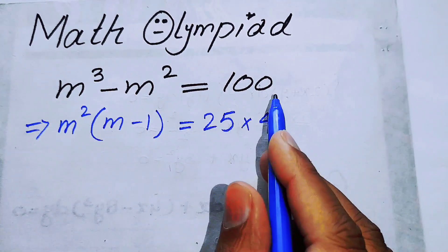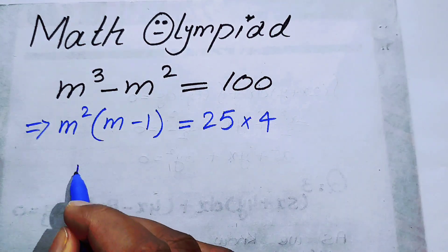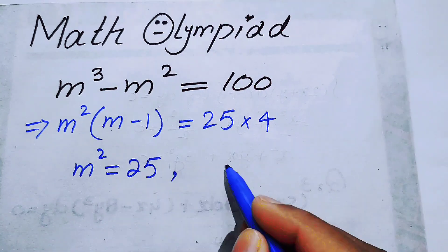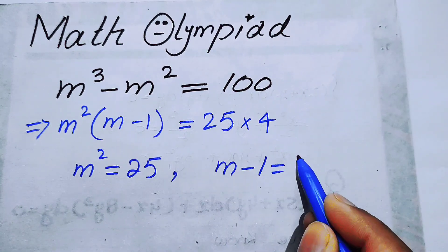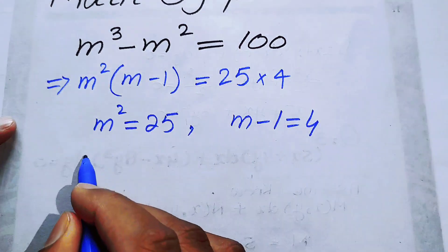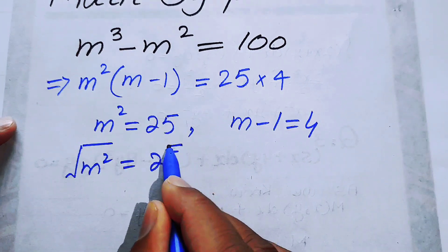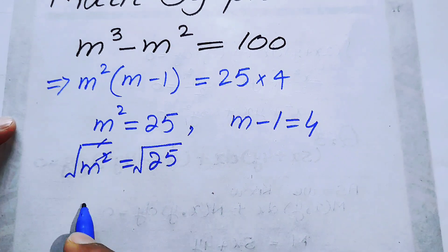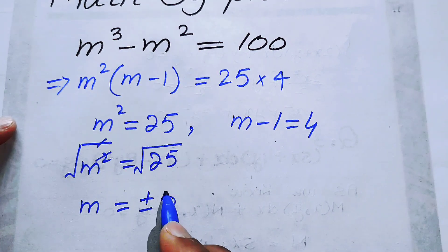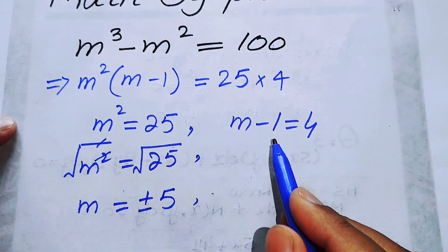25 times 4 equals 100. Now we compare both sides and we have two cases. The first case is m squared equals 25, and the other case is m minus 1 equals 4. For the first case, we take the square root on both sides, so the square root and the power of 2 cancel each other, and we get m equals plus or minus 5, since the square root of 25 is 5.